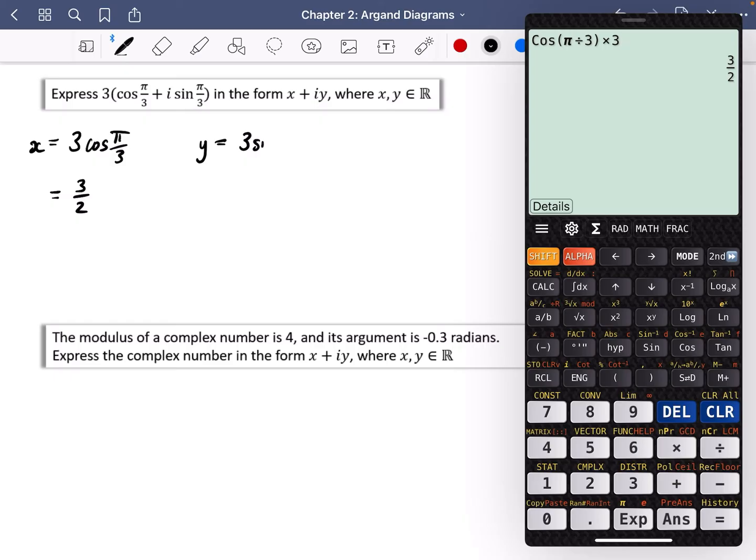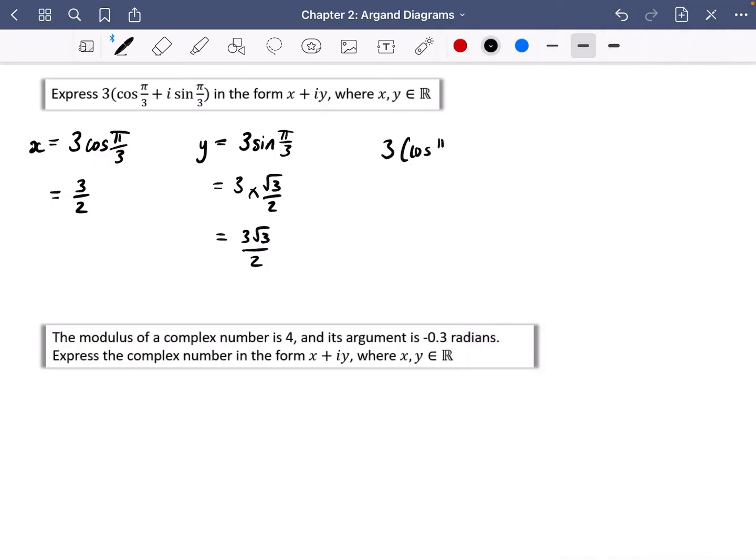And the y part is going to be three multiplied by sine pi over three. You should know that sine pi over three is root three over two, and it's going to be multiplied by three. So we're going to do the sine of pi over three and multiply that by three, and we get three root three over two. So 3(cos pi over three + i sine pi over three) is equal to three over two plus three root three over two i. Just to make that really, really clear, the three and the cos pi over three gives you the real part, and the three with the sine pi over three is the bit that gives you the y part.